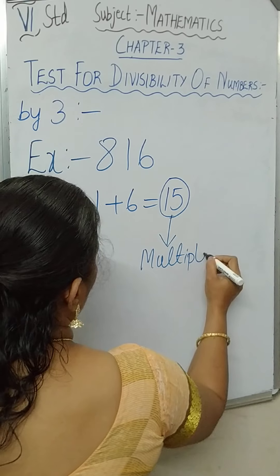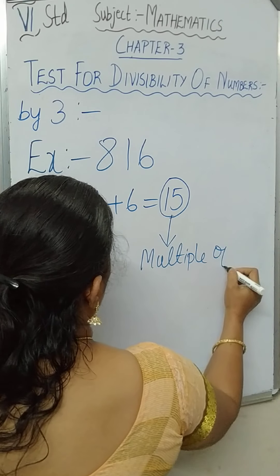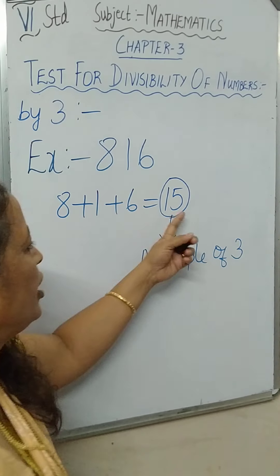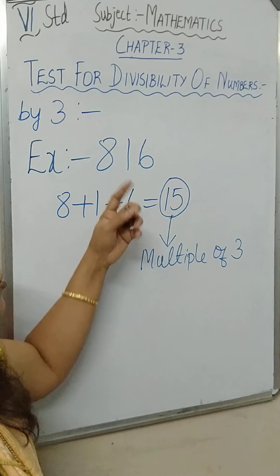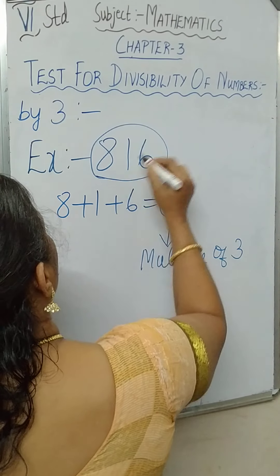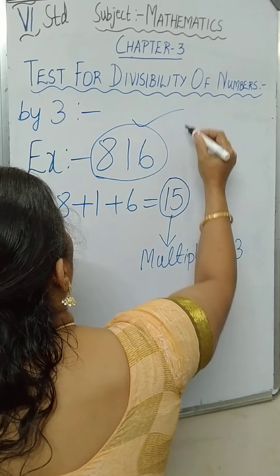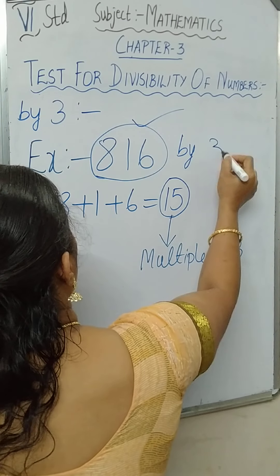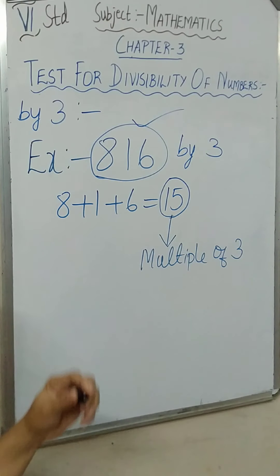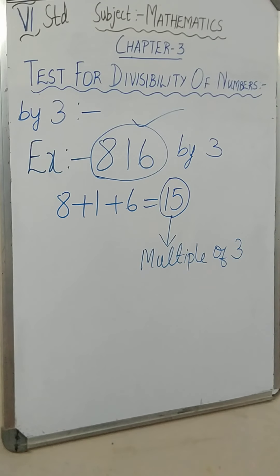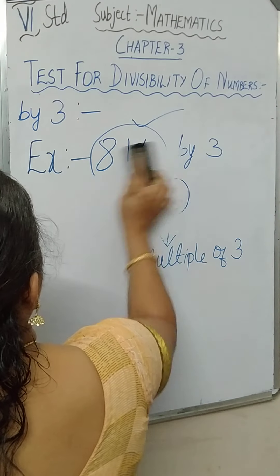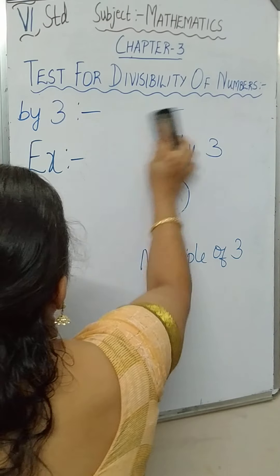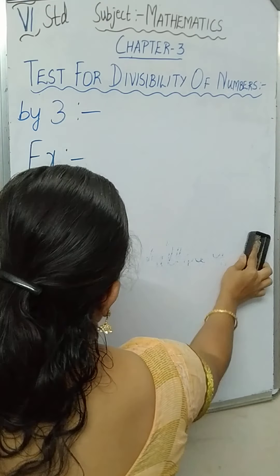Is 15 a multiple of 3? Yes, of course. 15 is a multiple of 3. So 816 is divisible by 3. Did you get it? It may be any number — a 3-digit number or a bigger number. The rule is the same.